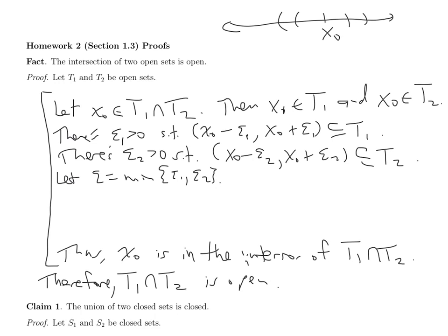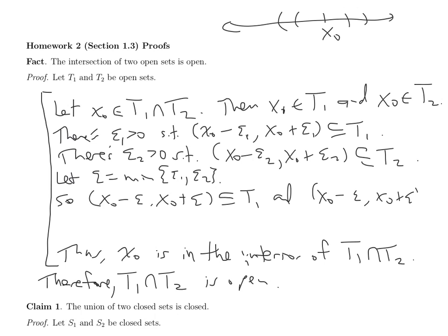That means the neighborhood (X0 minus epsilon, X0 plus epsilon) is the smaller of the two neighborhoods. In particular, that is going to be a subset of T1, and that same neighborhood is going to be a subset of T2. Therefore, (X0 minus epsilon, X0 plus epsilon) is a subset of T1 intersect T2.